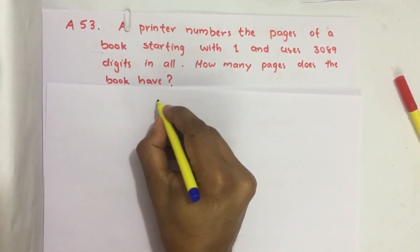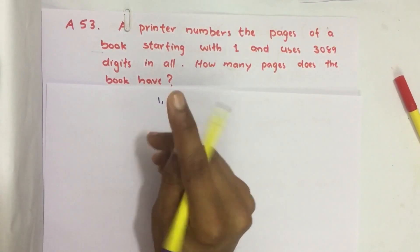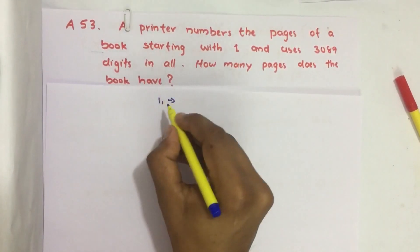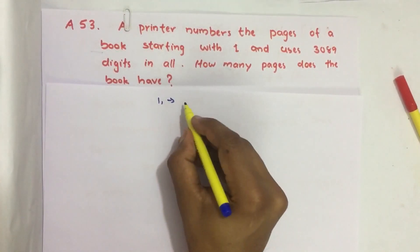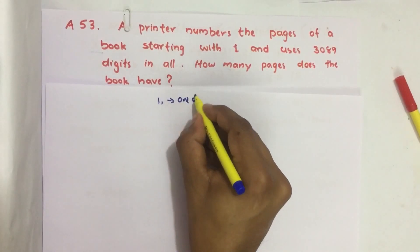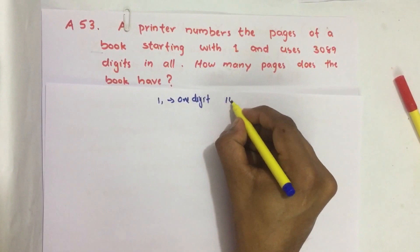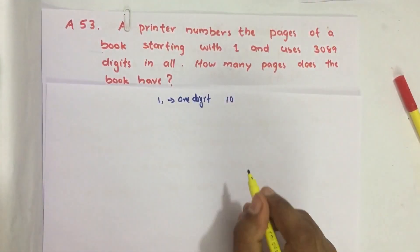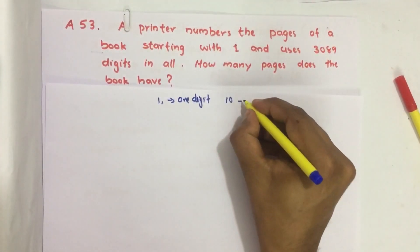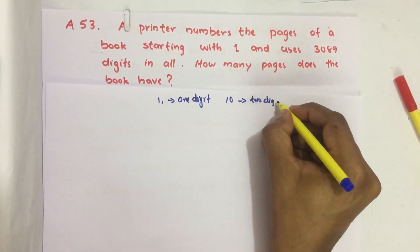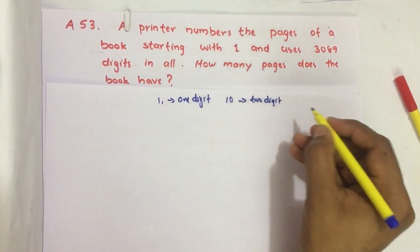To write a single digit, we need one digit. To write one, we use one digit. To write ten, we use two digits - one and zero. For hundred, three digits. For thousand, we use four digits.